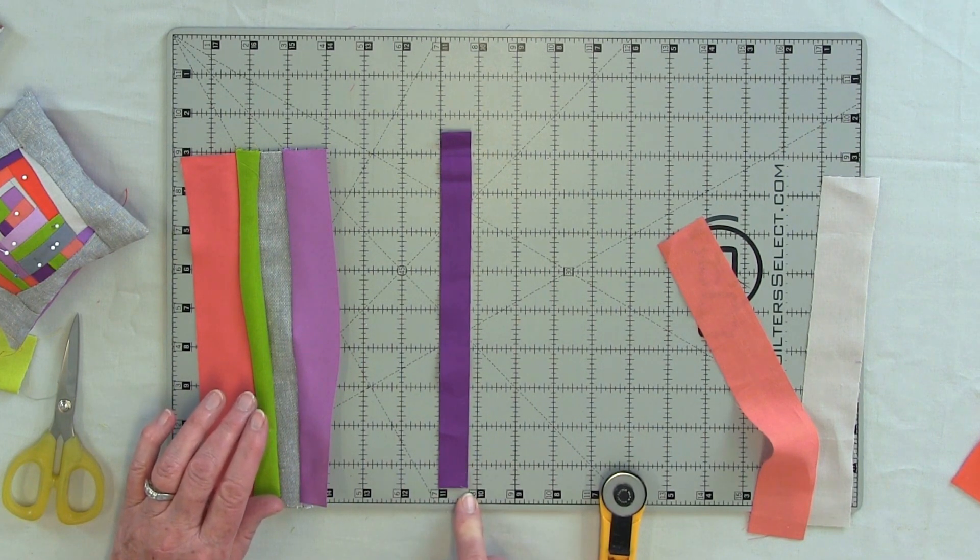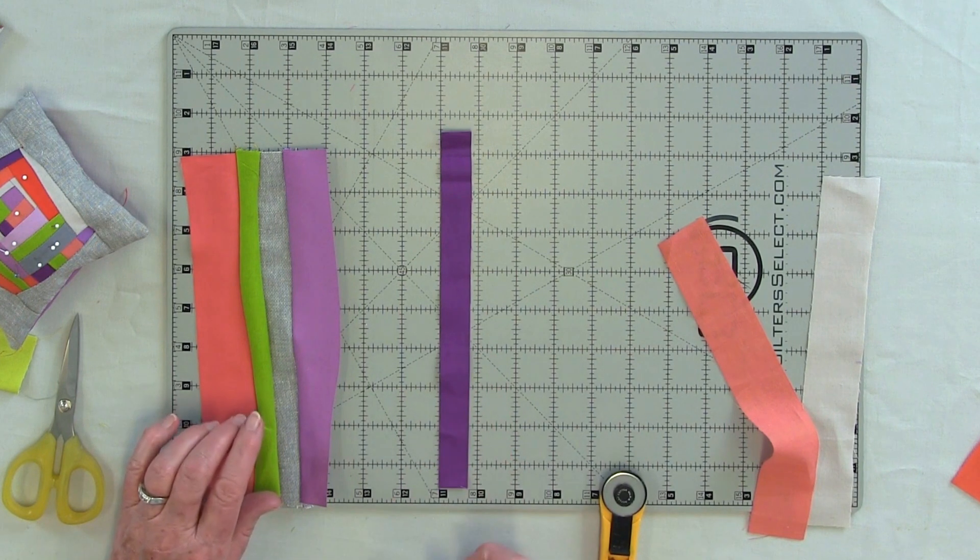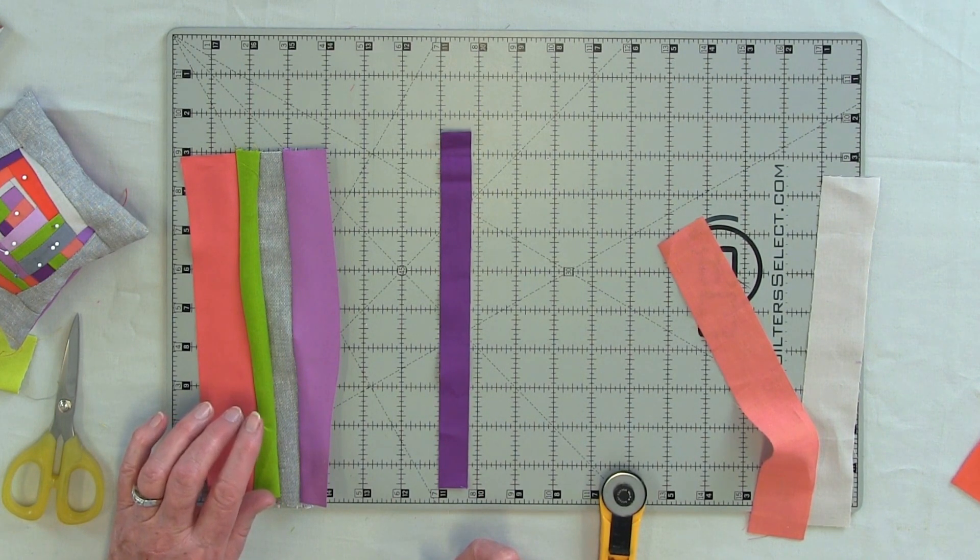Or you can lay it on a cutting mat that has a grid, and you can eyeball the three-quarters of an inch. By the time we get finished, it's going to end up about an eighth of an inch.